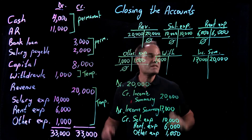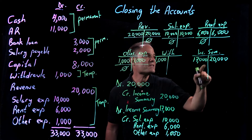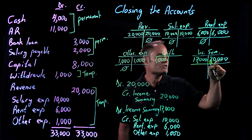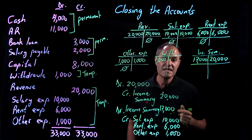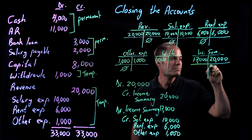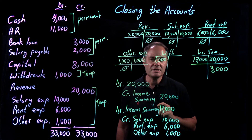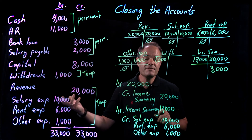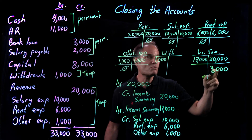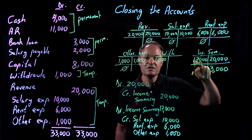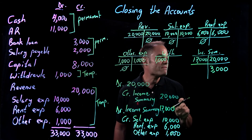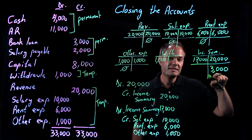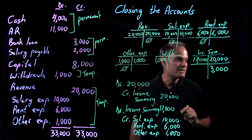Now I've got the income summary account. The balance is $20,000 minus $17,000, which is $3,000 credit. Remember from the last video — the net profit for this company was $3,000. $20,000 was the revenue and $17,000 was the total expenses, so the difference is the profit. That's why we call this the income summary — it's our check to make sure we're doing this right. We compare this number with the net profit on the income statement, and they match.